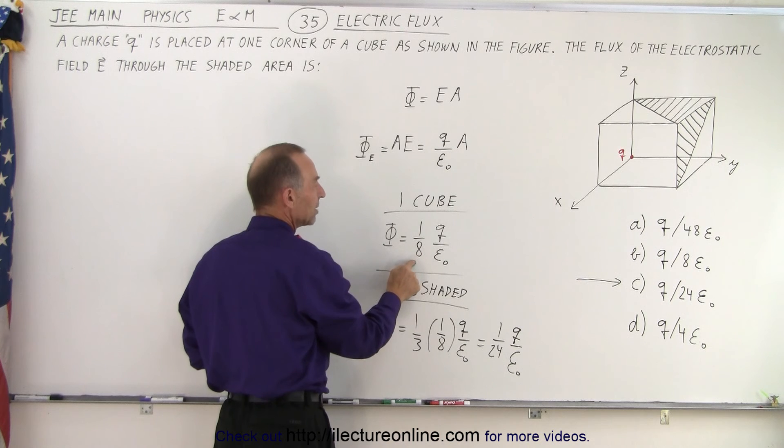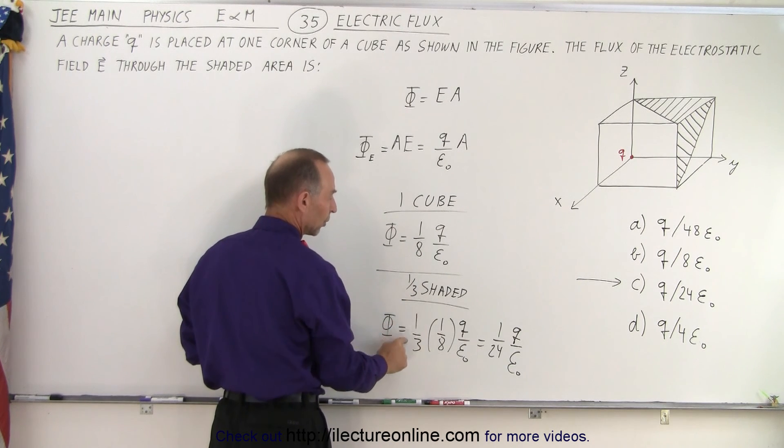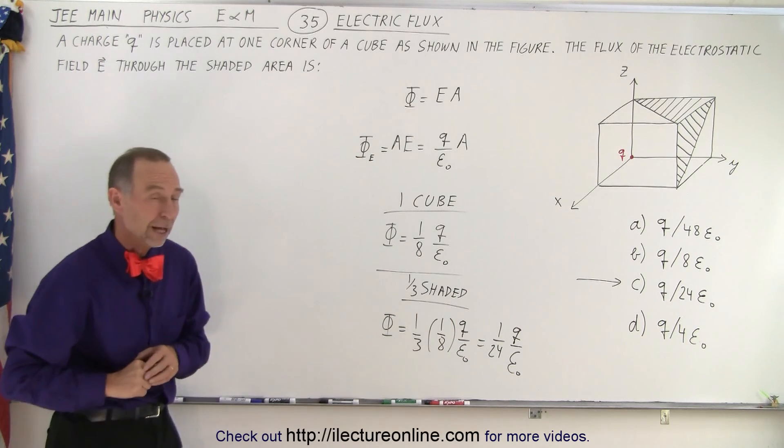Since that one cube is one-eighth. And each cube, the cube is only one-third shaded. So, it's one-third of one-eighth or one-twenty-fourth of Q over epsilon sub-naught.